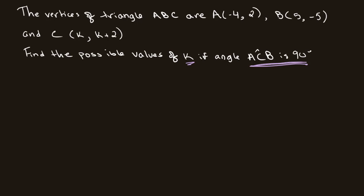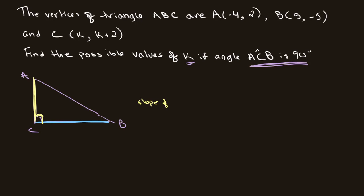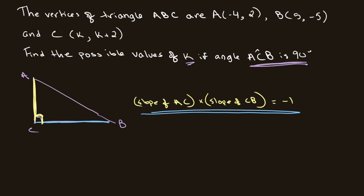If we have a right-angle triangle where angle ACB is 90 degrees, one thing we know is that line BC is perpendicular to line AC, because of this 90-degree angle. Through this we can derive that if we multiply the slope of AC by the slope of CB, we will get negative 1. This is because of the rule regarding perpendicular lines. So we need to find the slope of AC and the slope of CB to solve for k.